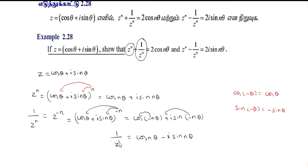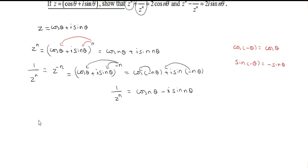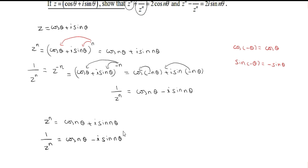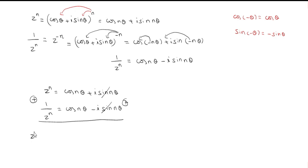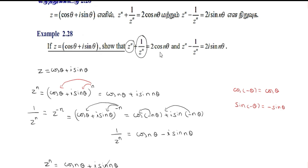Adding the two results: z^n equals cos(nθ) plus i sin(nθ), and 1 divided by z^n equals cos(nθ) minus i sin(nθ). Adding them together, the imaginary parts cancel and we get z^n plus 1 divided by z^n equals 2 cos(nθ). This completes the first proof.